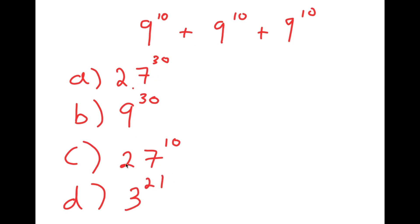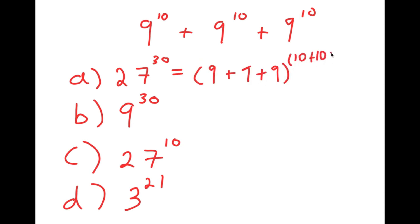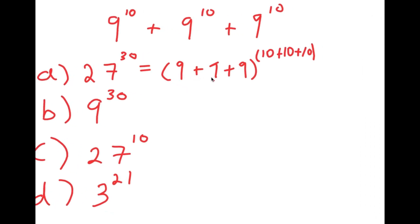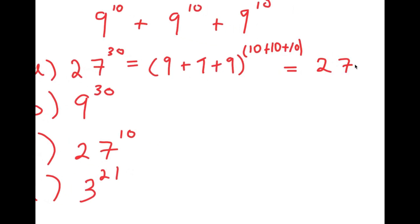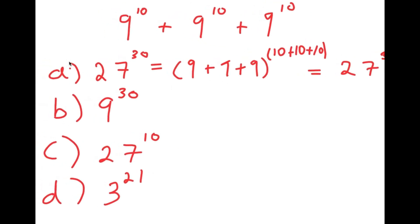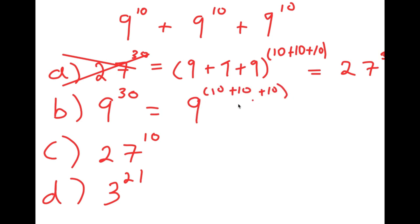Let's go through all the answer choices to see which are right or not. For A, 27 to the power of 30 was likely gotten by adding all the bases and adding all the exponents: 9 plus 9 plus 9 to the power of 10 plus 10 plus 10, giving 27 to the power of 30. This is wrong — that's not the proper way to add exponents. For B, 9 to the power of 30 was likely gotten by keeping the base the same and adding the exponents. This is also wrong.